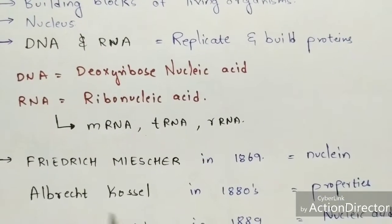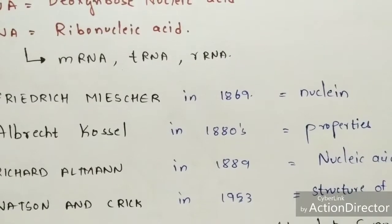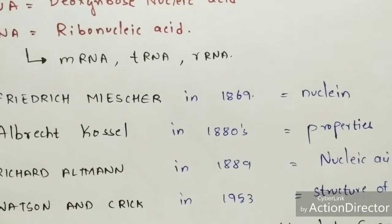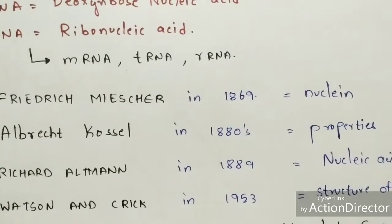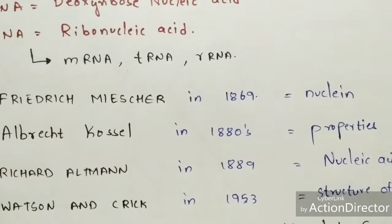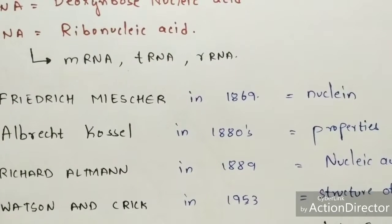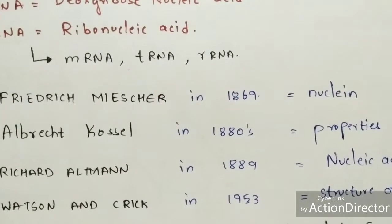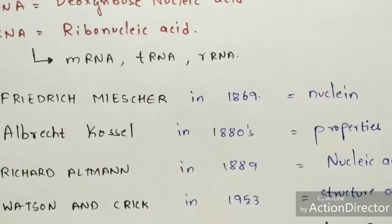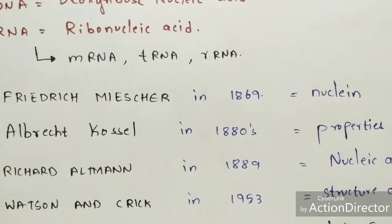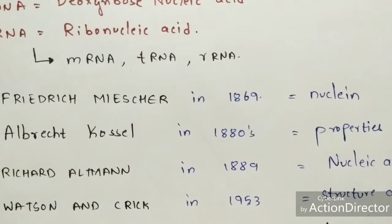Coming to the discovery of nucleic acids — Friedrich Miescher in 1869 discovered nucleic acid using a microscope. He discovered that nucleic acids are present inside the nucleus, but he named it 'nucleon' rather than nucleic acid.